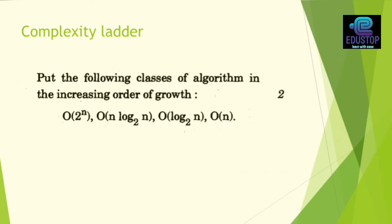First, they can ask about the complexity ladder. So they can ask some questions: put the following classes of algorithms in the increasing order of growth. Big O of 2 raised to power n, big O of n log 2n, log 2n, and big O of n. So you have to put these all in increasing order of growth. So this is the question of complexity ladder. It is a very important question that is always asked.